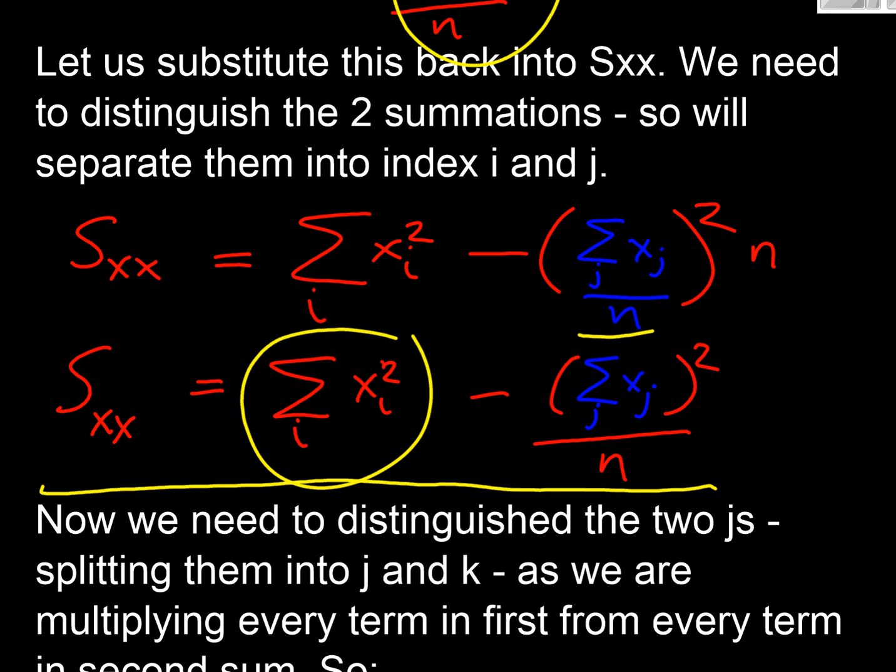Our first term is the sum of the x i squared, and here in the bracket we've got our second group of the sum of all the values. I'm going to call those j, i.e. the first second third fourth up to the nth, and I'm using j here to distinguish it from the i over here.